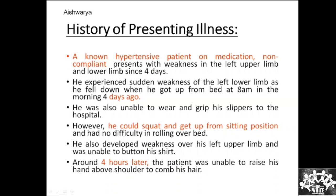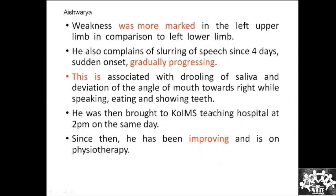If somebody has only upper limb weakness and slurring of speech, with the lower limb minimally weak — still able to walk and squat — it indicates a specific area of the brain is involved. The weakness was more marked in the left upper limb compared to the left lower limb. The moment you see more marked weakness in the upper limb than the lower limb, it indicates a preferential site in the brain — very classical for the MCA territory. The ACA territory would show lower limb weakness more than upper limb.